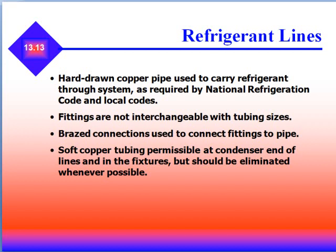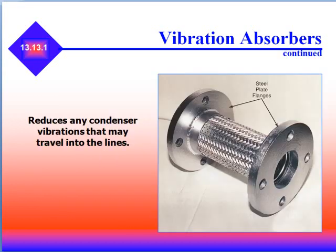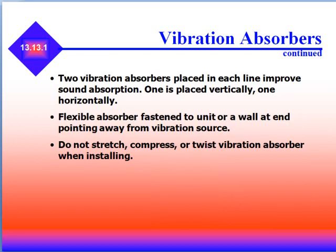Refrigerant lines are used in all refrigeration systems. They are hard-drawn copper pipe used to carry refrigerant throughout the system as required by the National Refrigeration Code and local codes. Fittings are not interchangeable with tubing sizes, and brazed connections are used to connect fittings to pipe. Soft copper tubing is permissible at the condenser end of the lines and in fixtures but should be eliminated whenever possible. Vibration absorbers are required to be installed in the compressor suction and discharge lines near the condenser to reduce vibrations that may carry down the lines. Two vibration absorbers placed in each line provide sound absorption — one placed vertically, one horizontally.